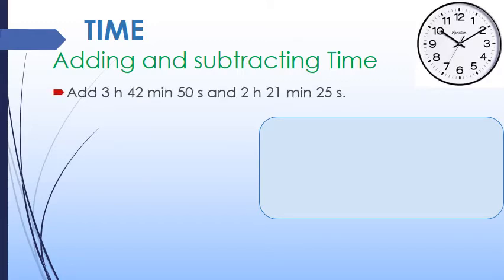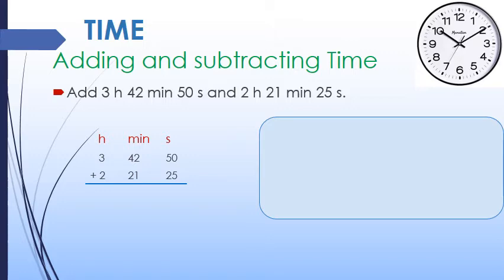Let us understand how we do the regrouping with the help of one example. Add 3 hours 42 minutes 50 seconds and 2 hours 21 minutes 25 seconds. We will make three columns: one for hour, one for minute, and one for second. Hour is the biggest unit, kept at the extreme left, and second is the smallest unit, kept at the extreme right.